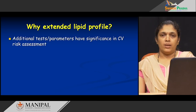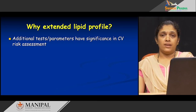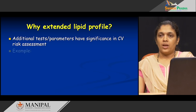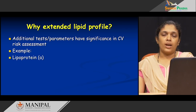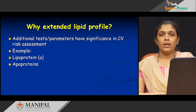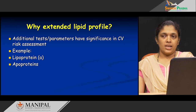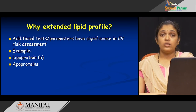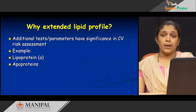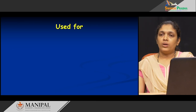We need an extended lipid profile because these additional tests or parameters are there, and when their levels are elevated, they are of more significance for us to assess the risk of having cardiovascular disease. These additional tests could include lipoprotein A or apolipoproteins, or many more tests apart from these two. Basically, the extended lipid profile includes the regular lipid profile, plus other lipids such as lipoprotein A and apolipoproteins.